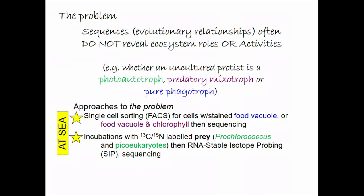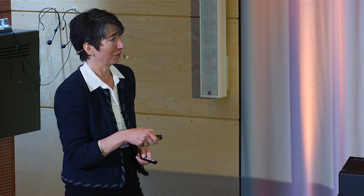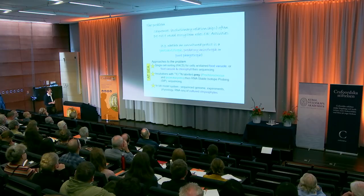There are some approaches to this problem. You could use single-cell sorting by flow cytometry for cells stained for a food vacuole. You could do incubations using 13C and 15N-labeled prey — we use Prochlorococcus — to then use stable isotope probing to pull out the heavy DNA, which tells us that organism ate those cells and has heavier DNA. I want to talk briefly now about an in-lab model system where we've sequenced the genome, done lots of experiments in physiology and RNA-seq.